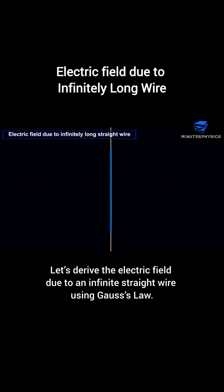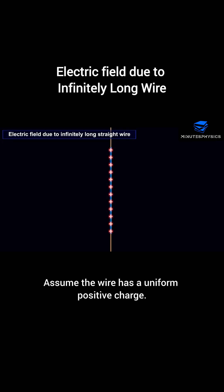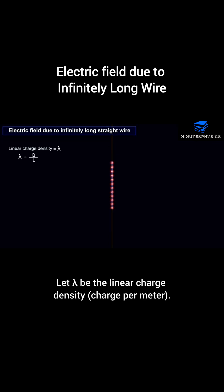Let's derive the electric field due to an infinite straight wire using Gauss's law. Assume the wire has a uniform positive charge. Let lambda be the linear charge density, charge per meter.